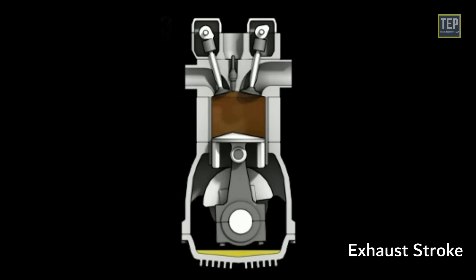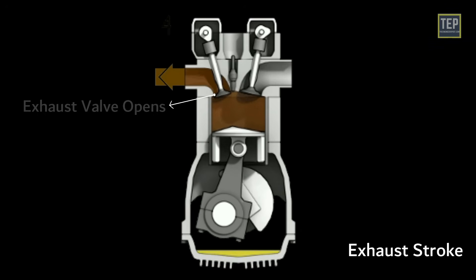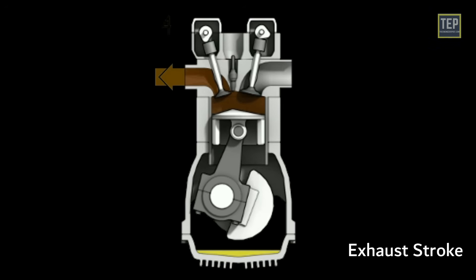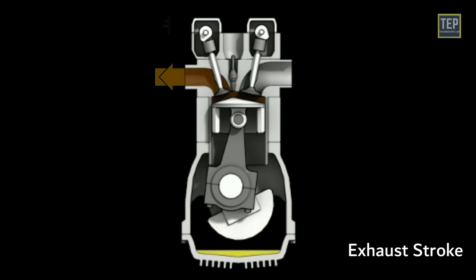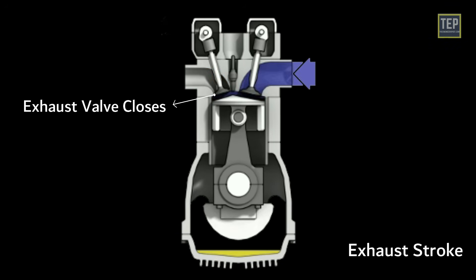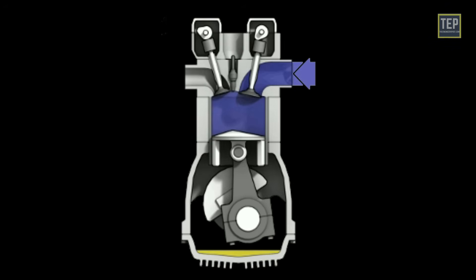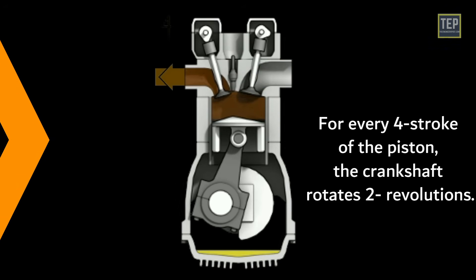Exhaust stroke: The piston reaches the bottom center at the end of the power stroke. The exhaust valve opens and the burnt gases escape at high speed. The piston moves up from bottom center, pushing out the remaining burnt gases. At the end of the exhaust stroke, the exhaust valve closes and the cycle repeats. For every four strokes of the piston, the crankshaft completes two revolutions.